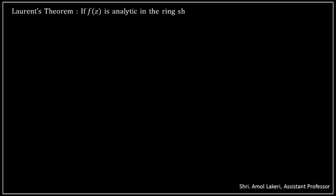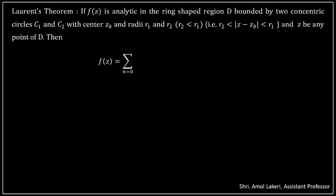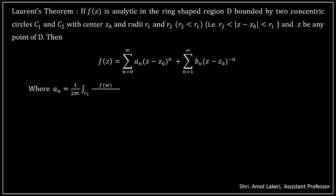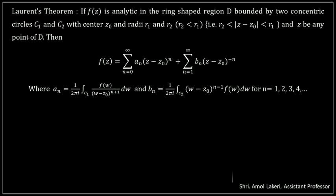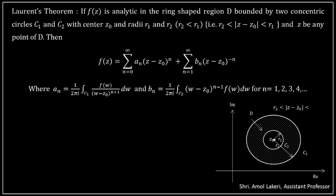Moving towards the statement: if F is analytic in a ring-shaped region D bounded by two concentric circles C1 and C2 with center Z0 and radii R1 and R2, with R2 less than R1, and Z is any point of D, then F is expressed as the sum of positive powers of Z minus Z0 and negative powers of Z minus Z0. The coefficients AN and BN are constants given by contour integrals. We sketch the region where Z0 is the center, R1 is the radius of the outer circle C1, R2 is the radius of the inner circle C2, and Z is any point at distance R from Z0.